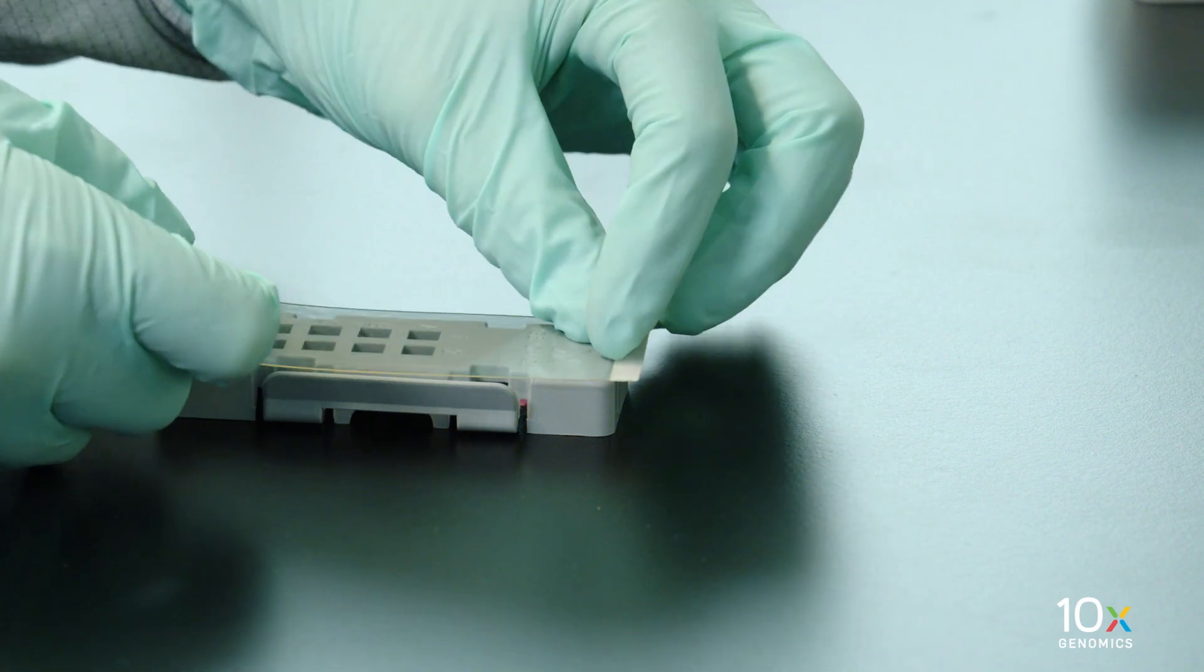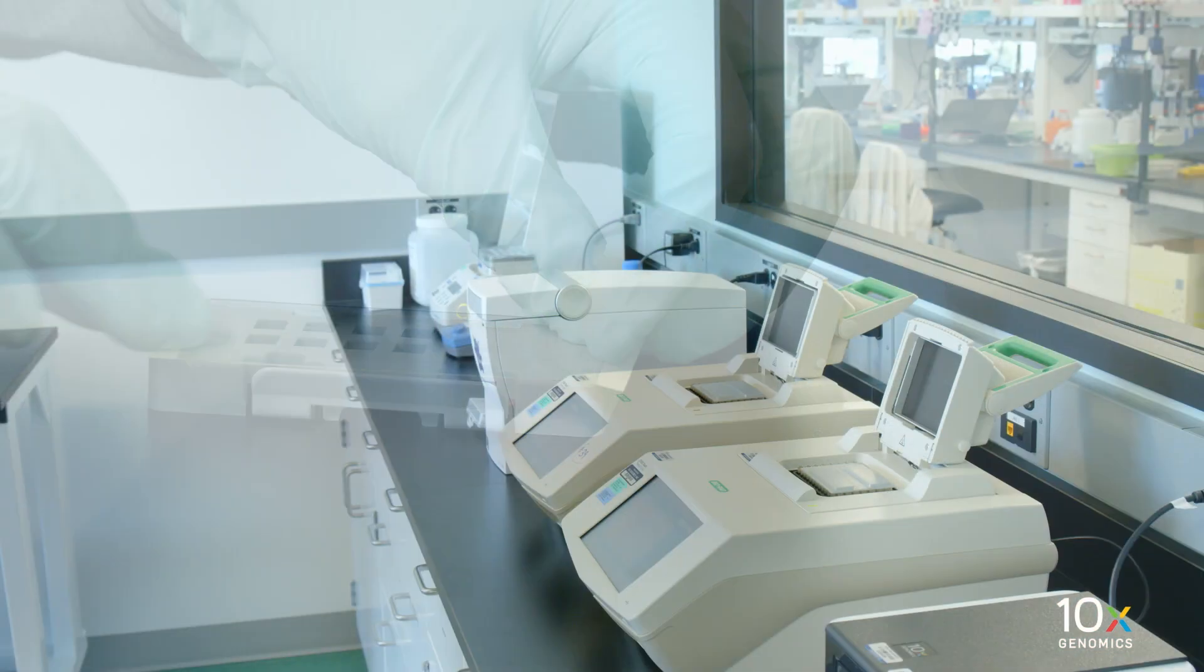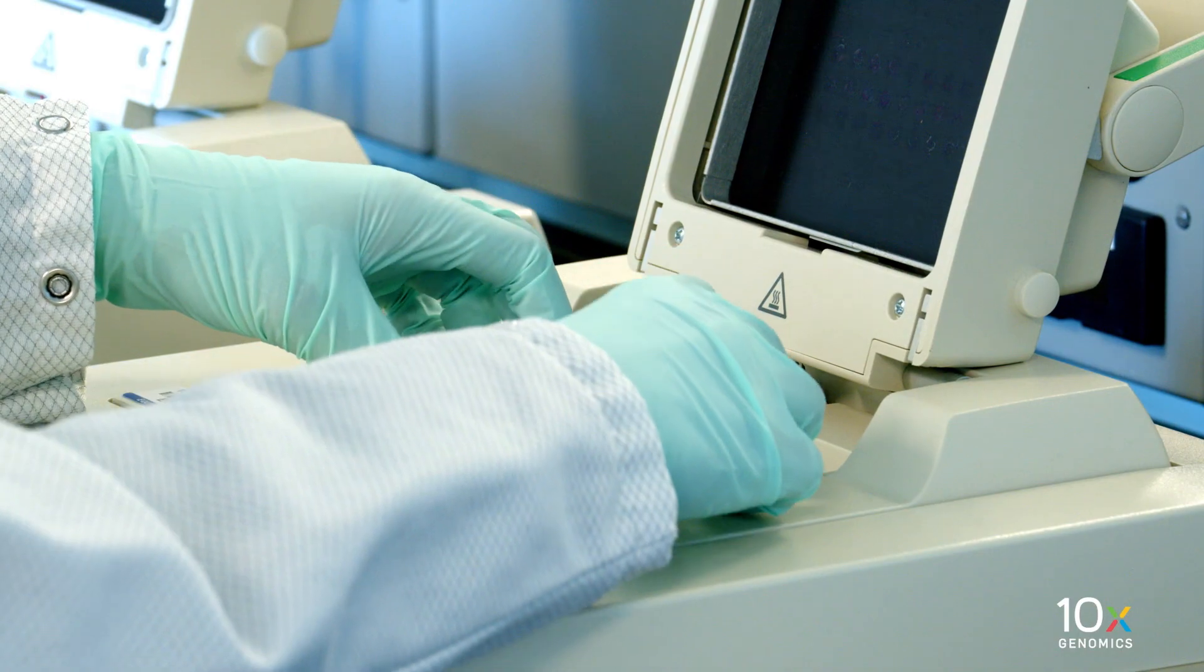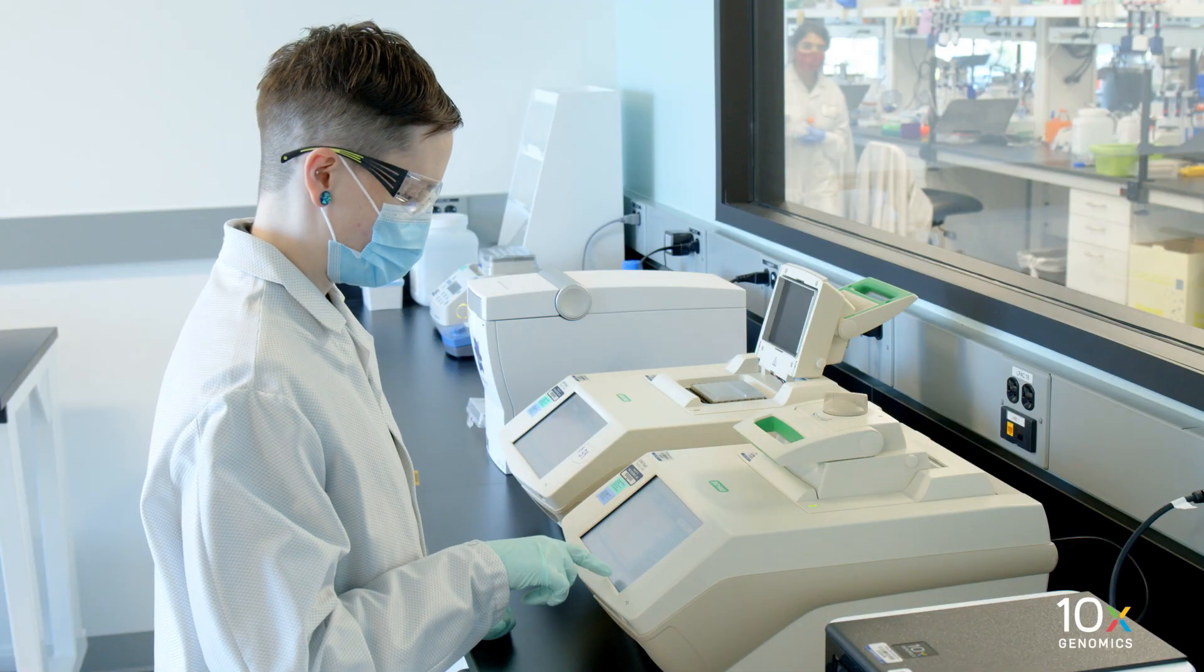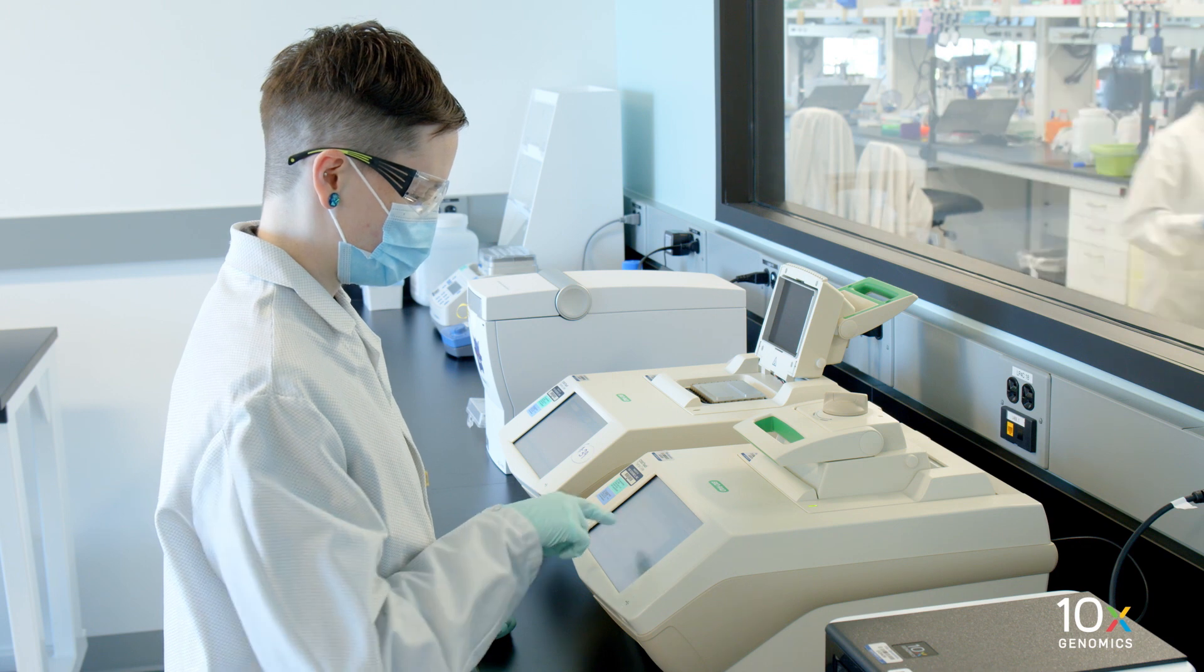Now we will incubate the slide on the thermocycler. Apply a Visium slide seal on the Visium cassette and place the cassette on the thermocycler adapter at 70 degrees Celsius. Close the thermal cycler lid. Skip the pre-equilibrate step and initiate decrosslinking.